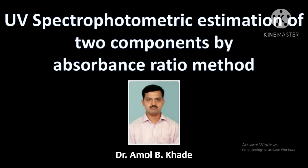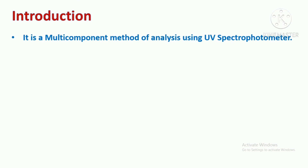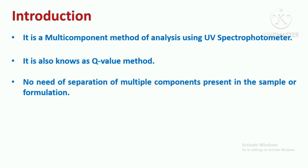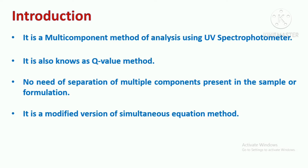Hello friends, welcome back to this video session on UV spectrophotometric estimation of two components by the absorbance ratio method. This is also a multi-component method of analysis using a UV spectrophotometer. In the previous session we discussed the multi-component method using the simultaneous equation method, also known as the Y-Rhodes method. In this session we will discuss the absorbance ratio method, also referred to as the Q-value method, where we need not separate multiple components present in a sample or formulation. Without separating them, we can estimate the concentration of each component — that is an advantage of this method, which is a modified version of the simultaneous equation method.